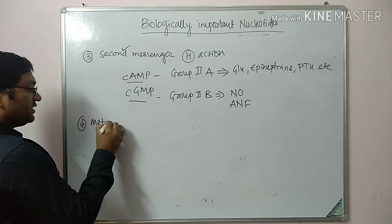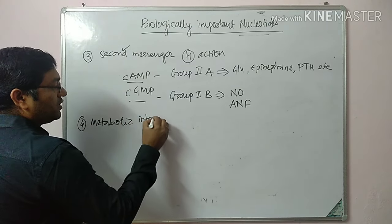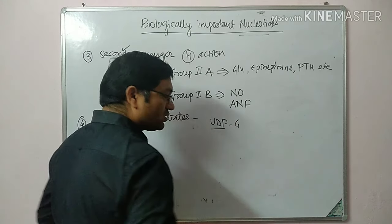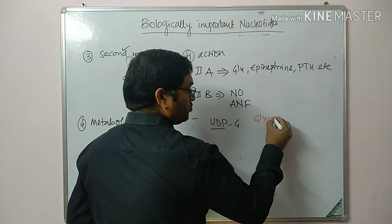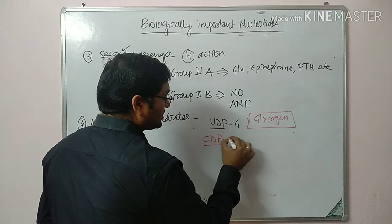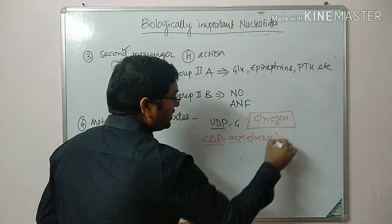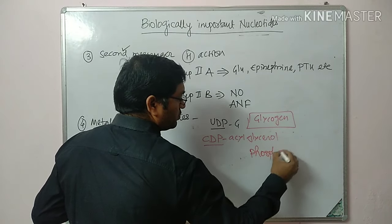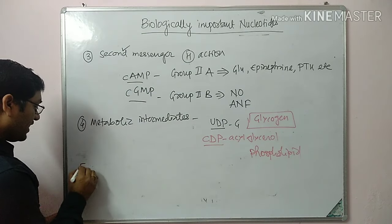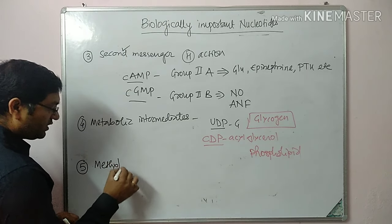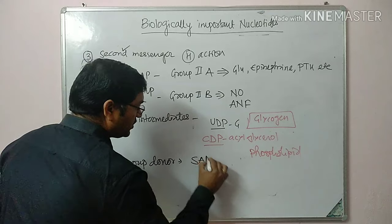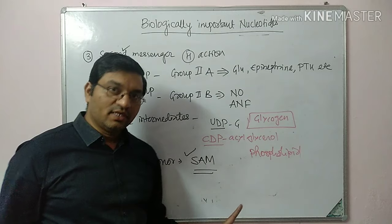The fourth function: some nucleotides are metabolic intermediates. For example, UDP-glucose (uridine diphosphate glucose) is important in glycogen metabolism. CDP (cytidine diphosphate acylglycerol) is important in phospholipid metabolism. Some nucleotides also act as methyl carriers — methyl group donors. For example, S-adenosyl methionine (SAM) is the universal methyl group donor. This is an important MCQ.